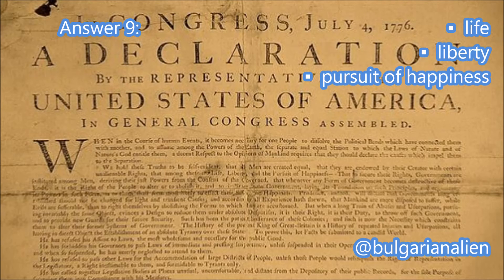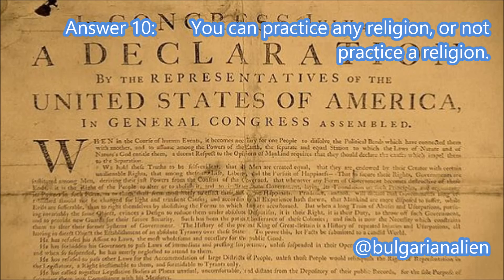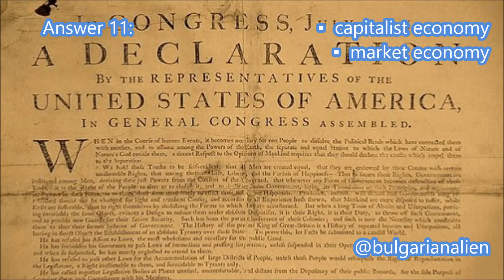What are two rights in the Declaration of Independence? Liberty and pursuit of happiness. What is freedom of religion? You can practice any religion or not practice a religion. What is the economic system in the United States? Capitalist economy, market economy.